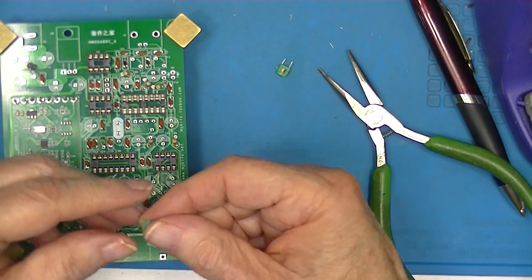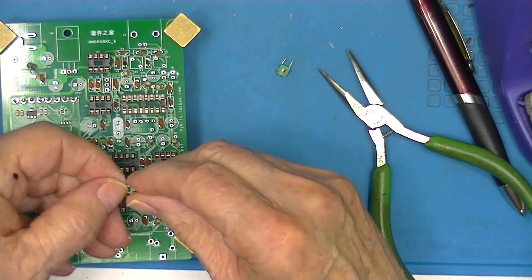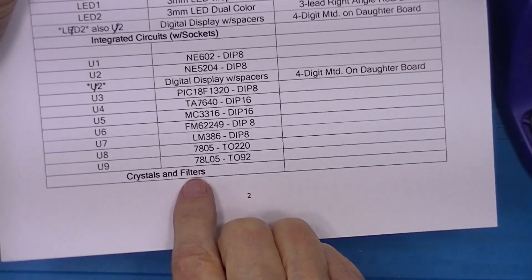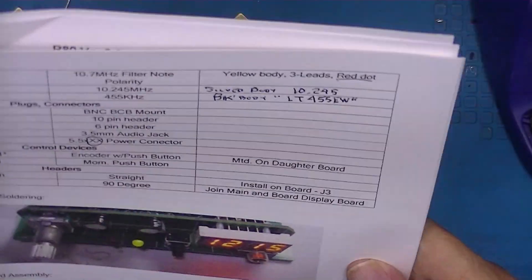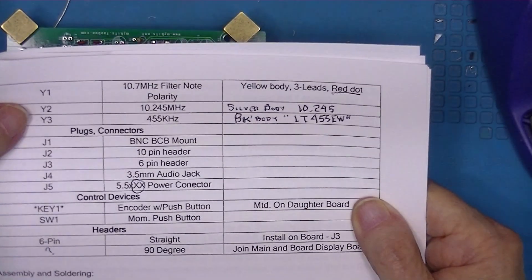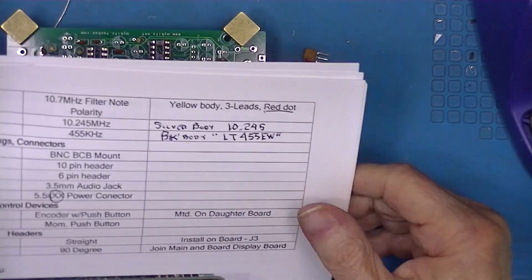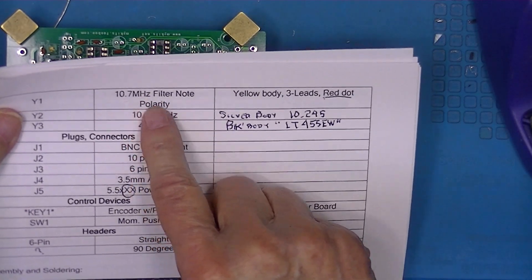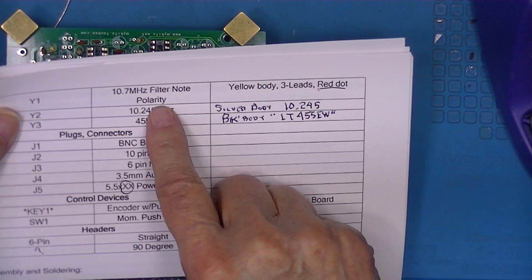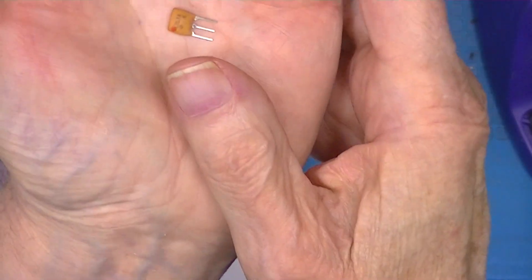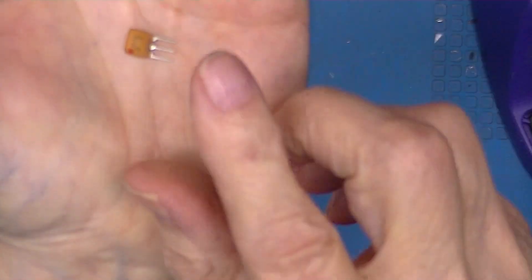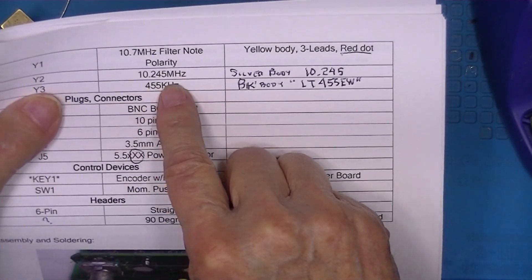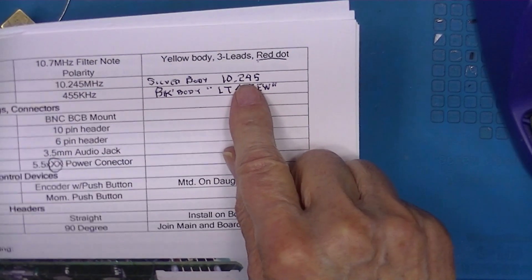We've got a section headed crystals and filters. There are three of them: a 10.7 megahertz filter, and they make a big deal out of watching for the polarity. It's got a yellow body and a red dot. Pay attention to that red dot. We have a 10.245 crystal oscillator marked 10.245.